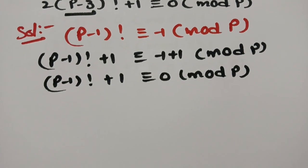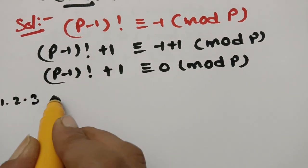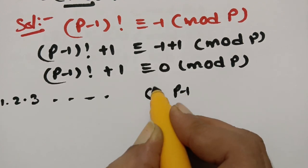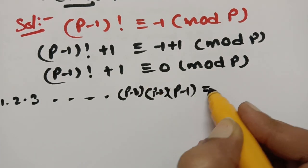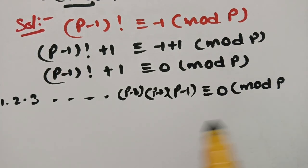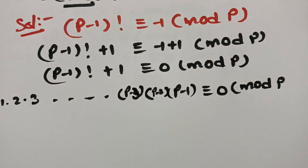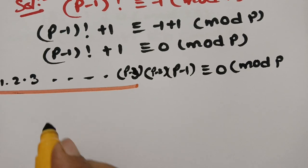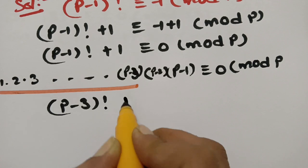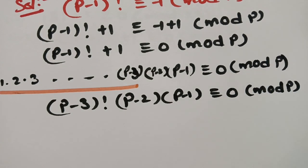We need P−3 factorial. Writing out (P−1)! = 1 × 2 × 3 × … × (P−3) × (P−2) × (P−1), we isolate P−3 factorial: (P−3)! × (P−2) × (P−1) + 1 ≡ 0 (mod P).